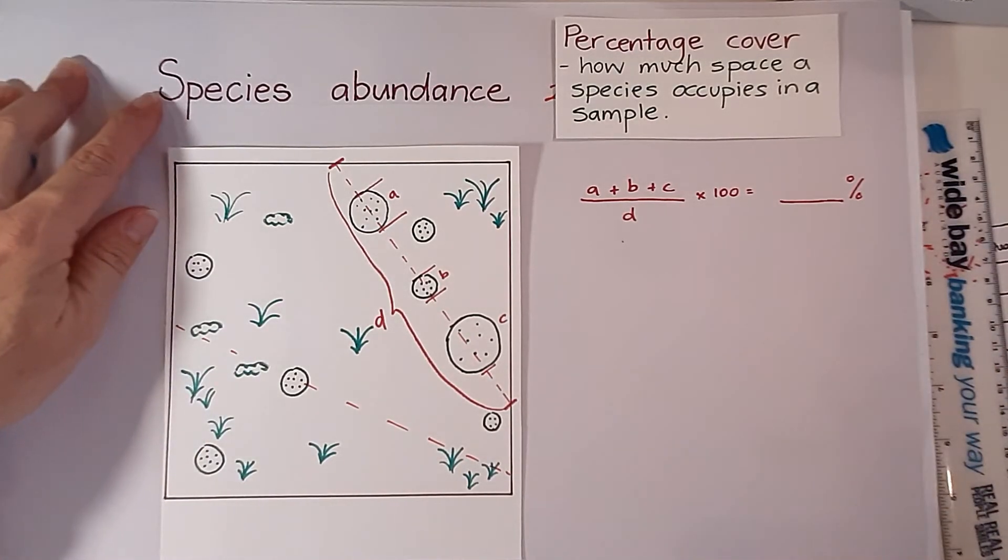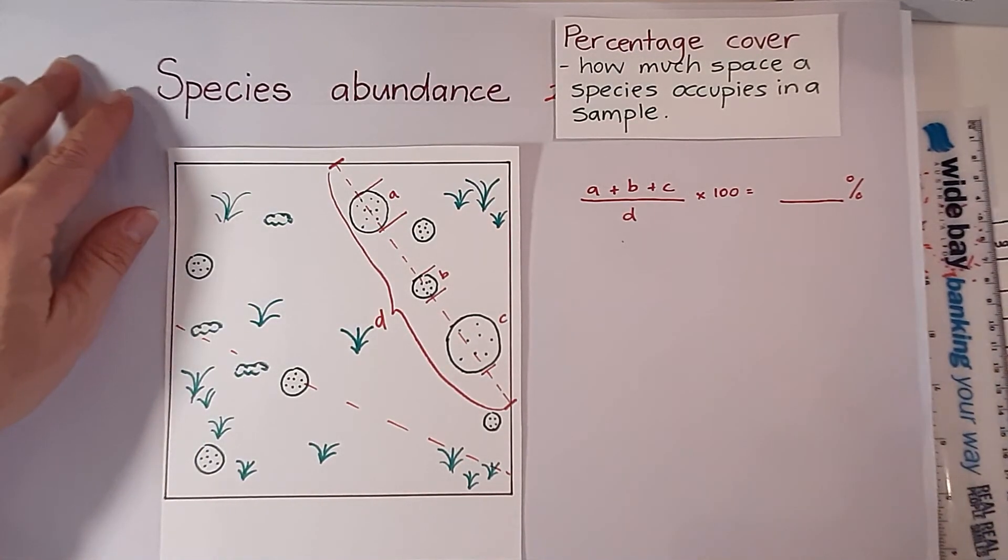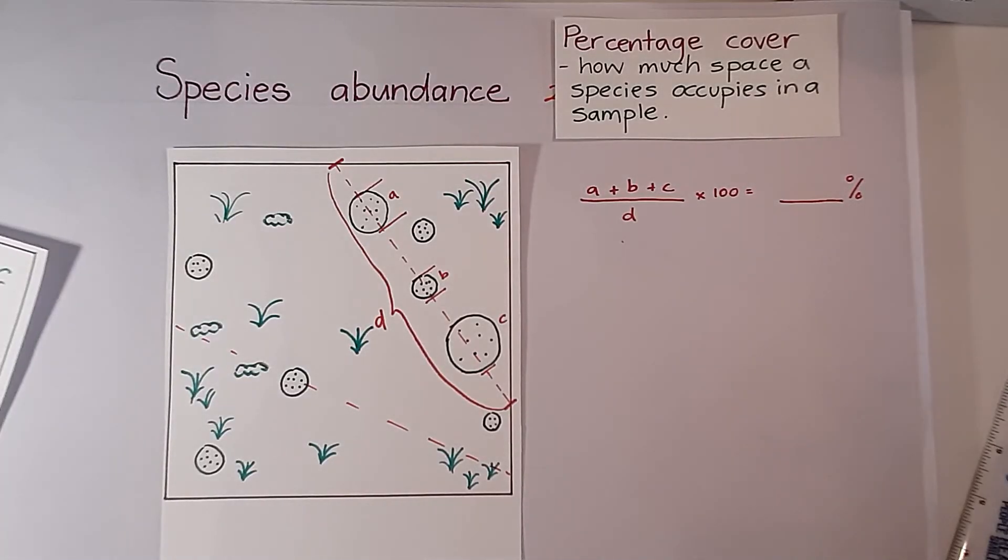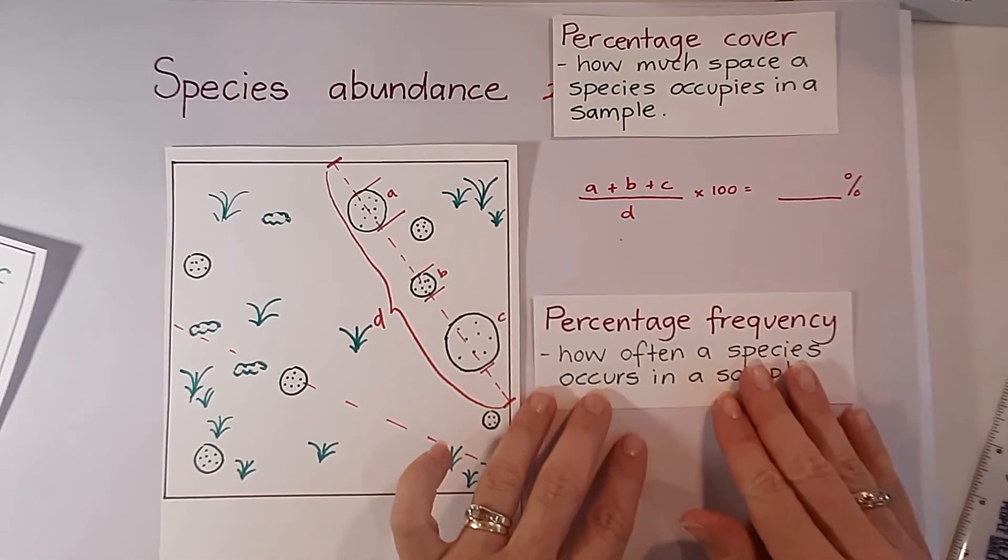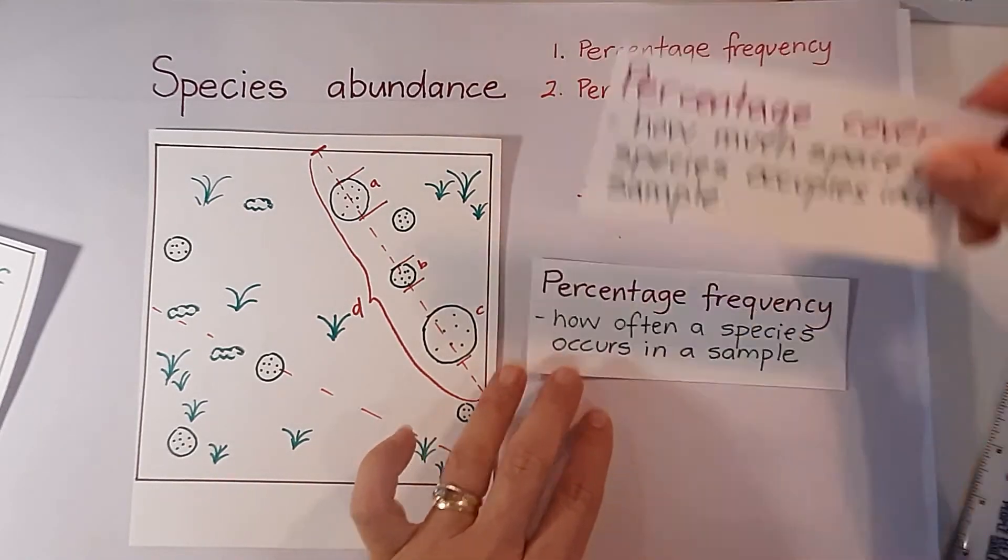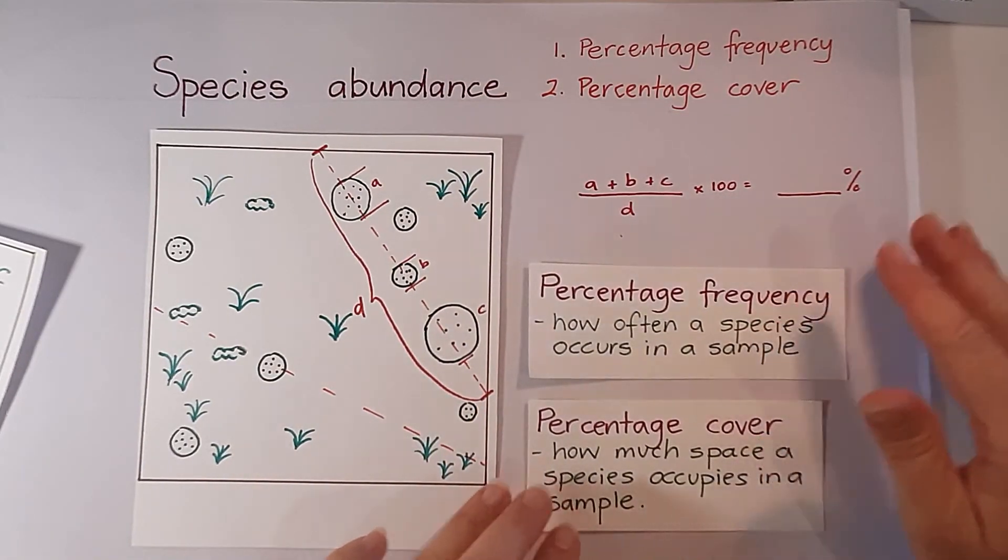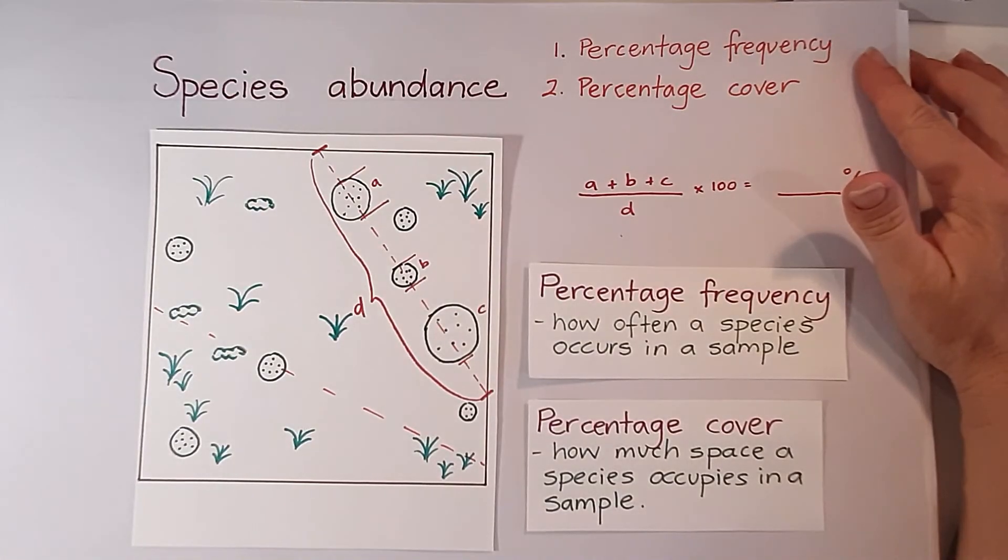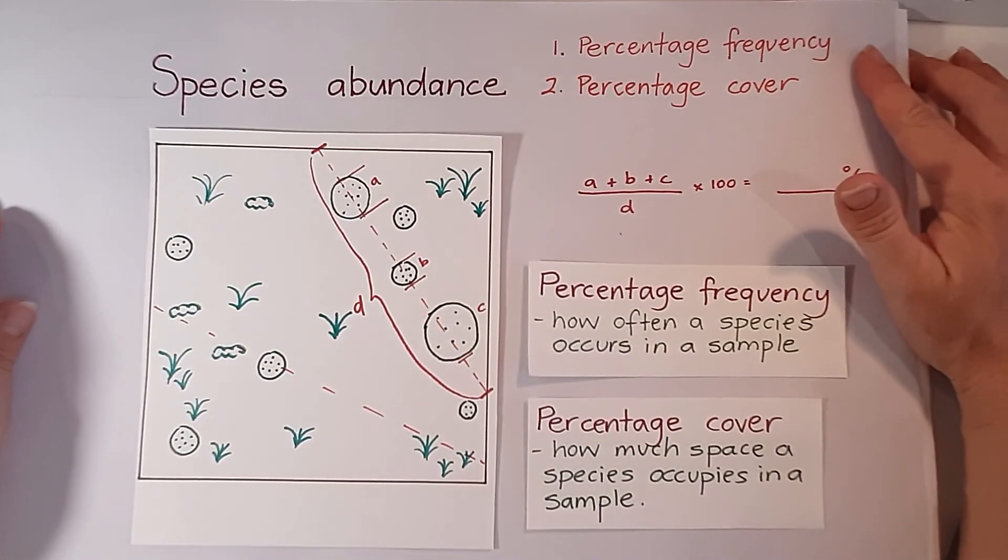So this video has talked about species abundance. We've looked at species percentage frequency, how often a species will occur in a sample, and we've looked at percentage cover. So I hope you feel confident about those two aspects.